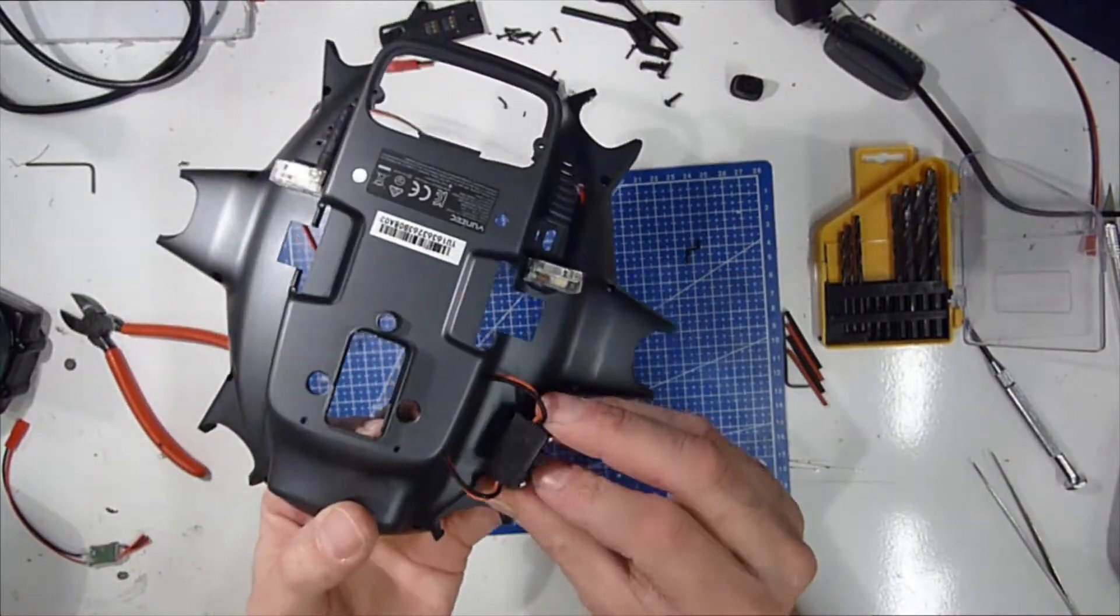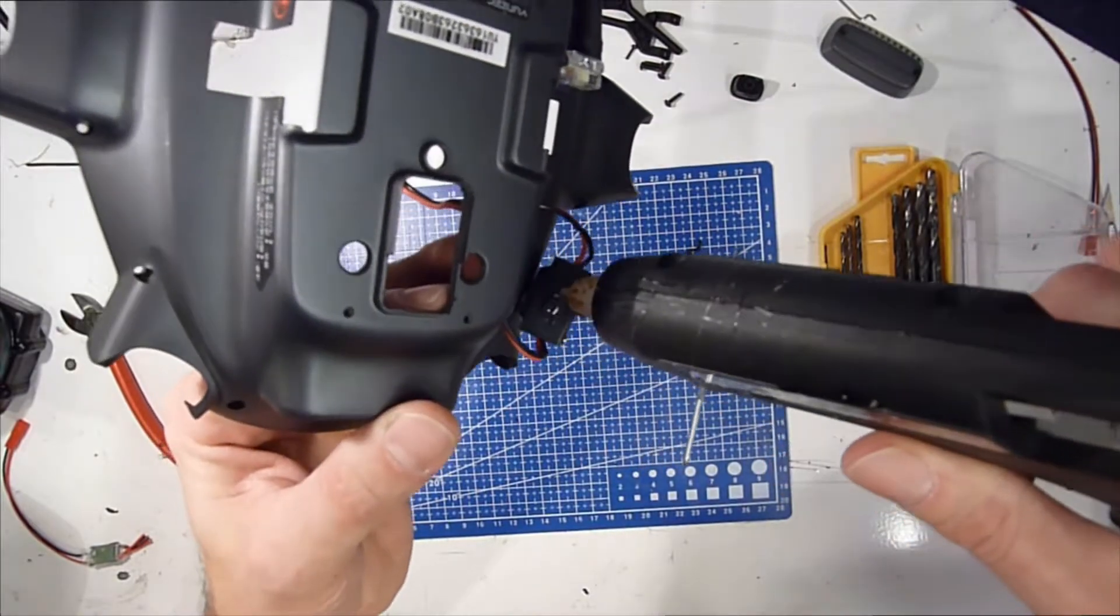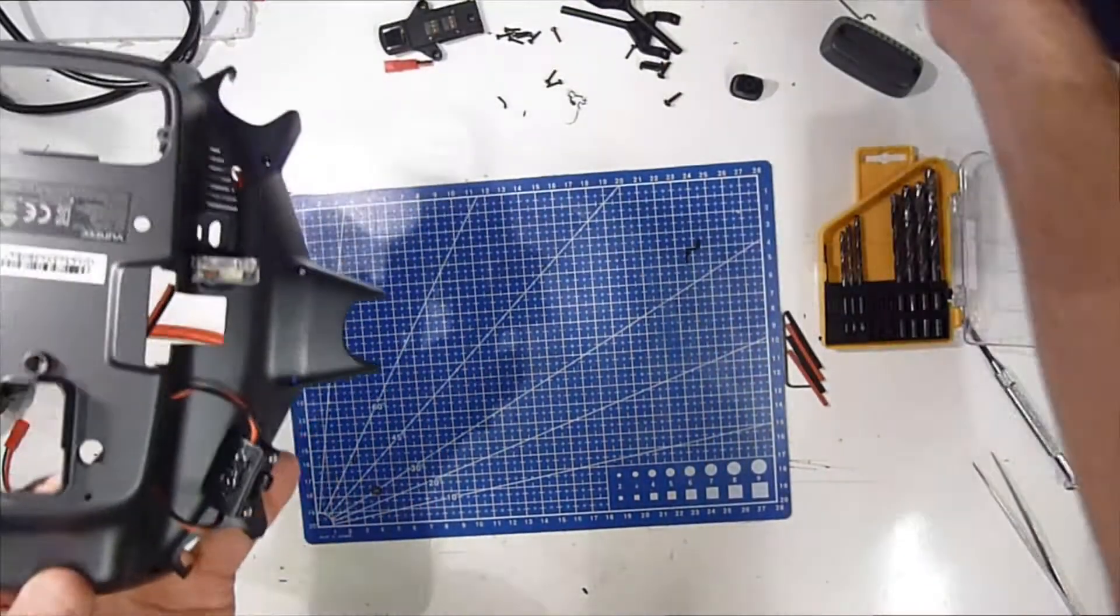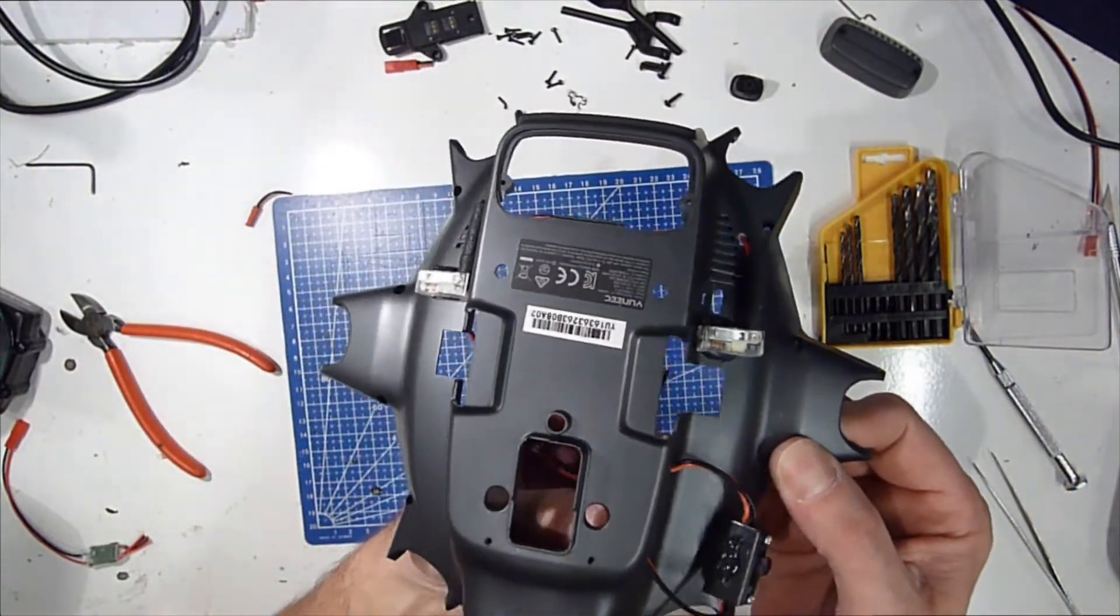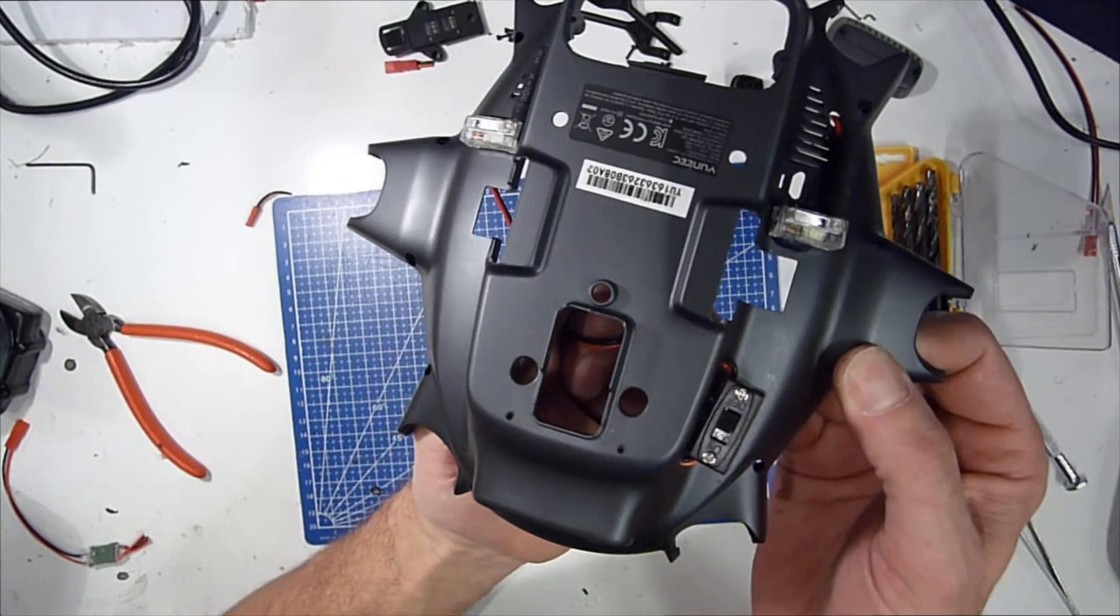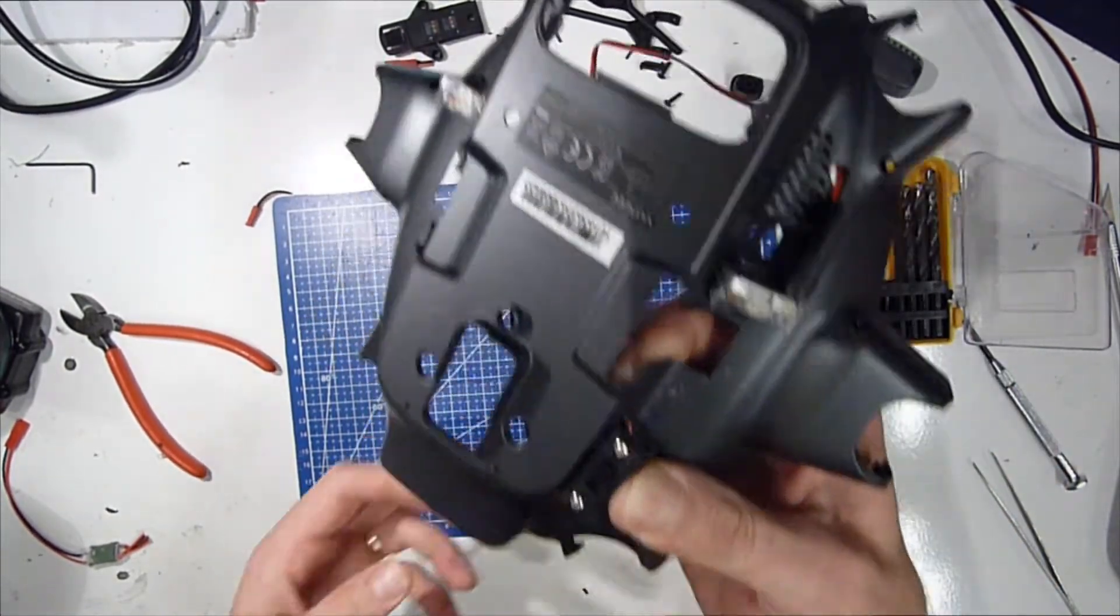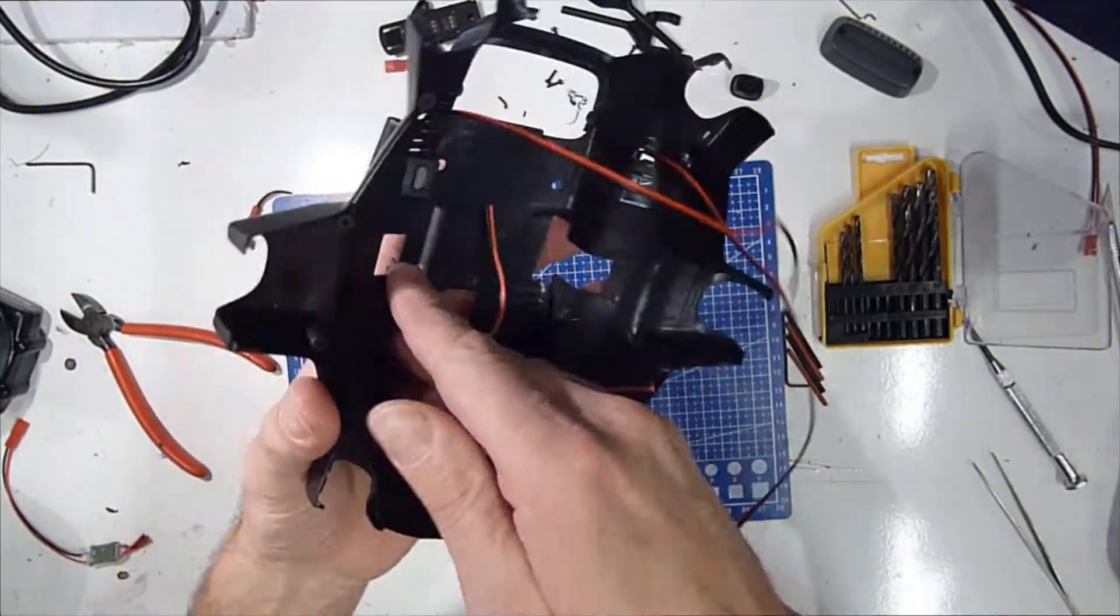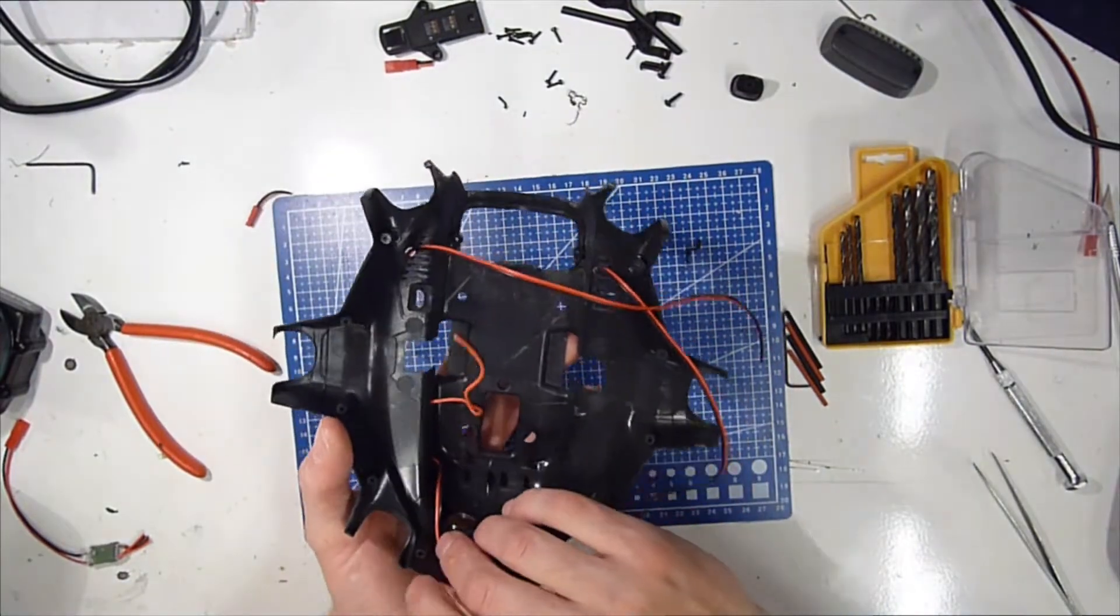Get some glue. Not too much, I don't want to smear the whole thing with hot glue. There we go, this one's going to be connected to the power side.